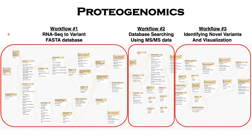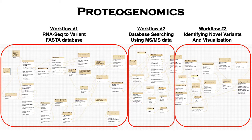This is how the complete workflow looks like. For the purpose of the tutorial, we have separated them into three different workflows. In the first tutorial, you learnt about RNA-seq to variant FASTA database creation. In the second tutorial, you learnt about database searching using MS-MS data. And now, in the third tutorial, you will learn about identifying novel variants and their visualization.